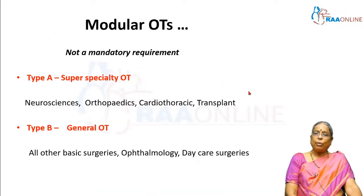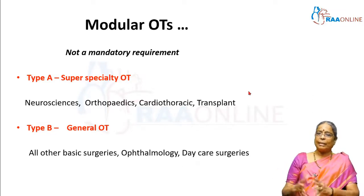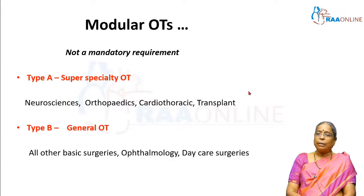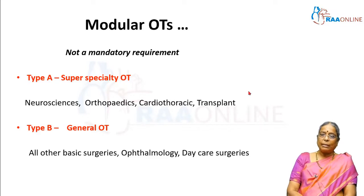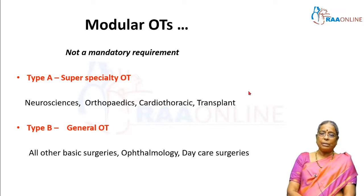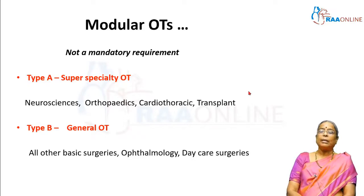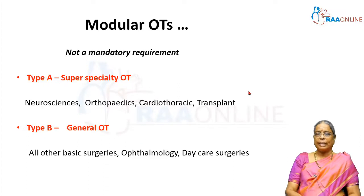Now, is there a requirement for modular OTs? Modular OTs are those OTs which are prefabricated and then brought in and fitted — just like we have modular kitchens, we have modular OTs too. But modular OTs are not a mandatory requirement. The OTs are divided into type A and type B. The type A OTs are the super-specialty OTs which require more stringent environmental conditions; these are the OTs where you perform neurosurgical procedures, orthopedics, cardiothoracic, and transplant procedures. The type B OTs are generally the general OTs where other basic surgeries are done — ophthalmic surgeries, daycare surgeries — with less stringent conditions than the type A OTs.